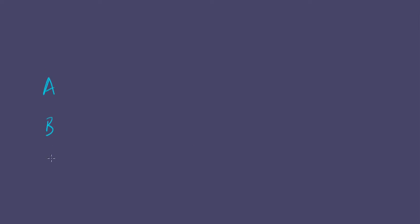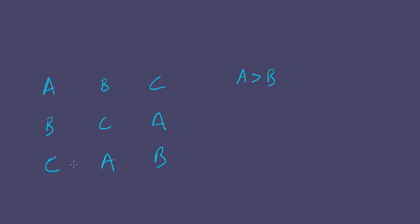The standard setup is: voter one has A, B, C. Voter two thinks B is best, then C, then A. And voter three thinks C is best, then A, then B. Now how do we fare? First, we compare A and B. One person prefers A over B, one person prefers B over A, but the third person says A over B — so the majority says A is ranked better than B. This goes in our social ranking.